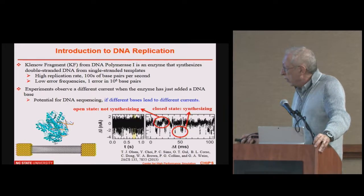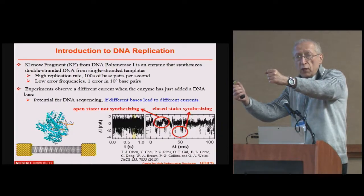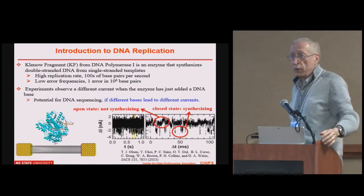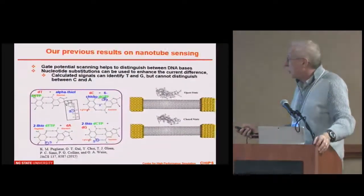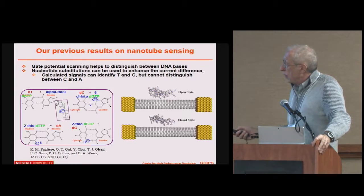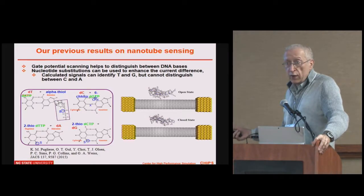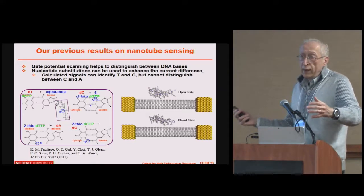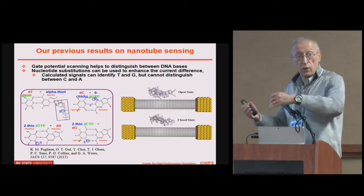In experiments with these fragments attached to a nanotube, an electrical signal monitoring current through the nanotube is observed when the polymerase is either open — not synthesizing — or closed, stapling the base pair and then moving up to the next one, with complementary nucleotides adding from solution. Working together with experimentalists, they found that by making atomic substitutions in the nucleotides, one could have slightly different signals, potentially leading to electrical identification of which base pair is being added. If you have electrical identification, you have sequencing as you monitor that current.